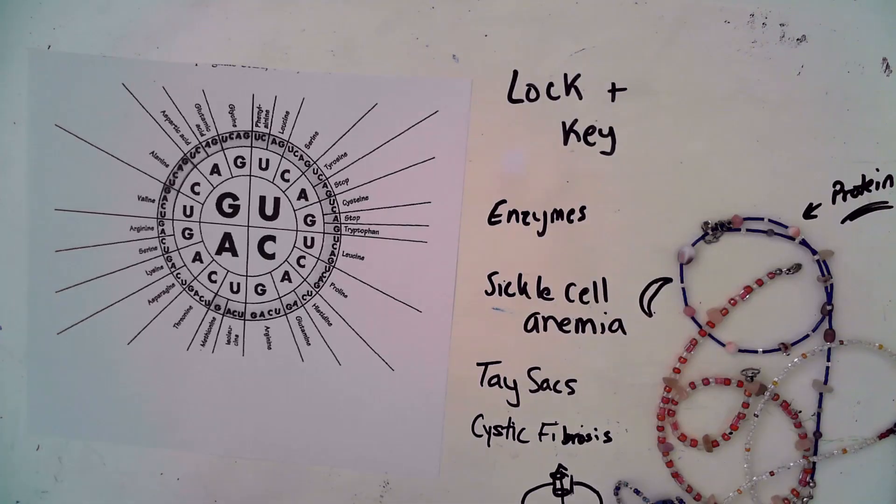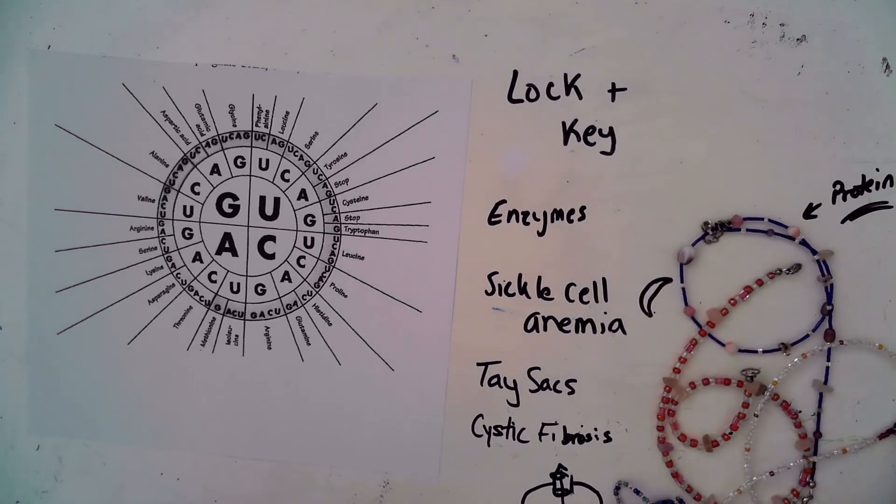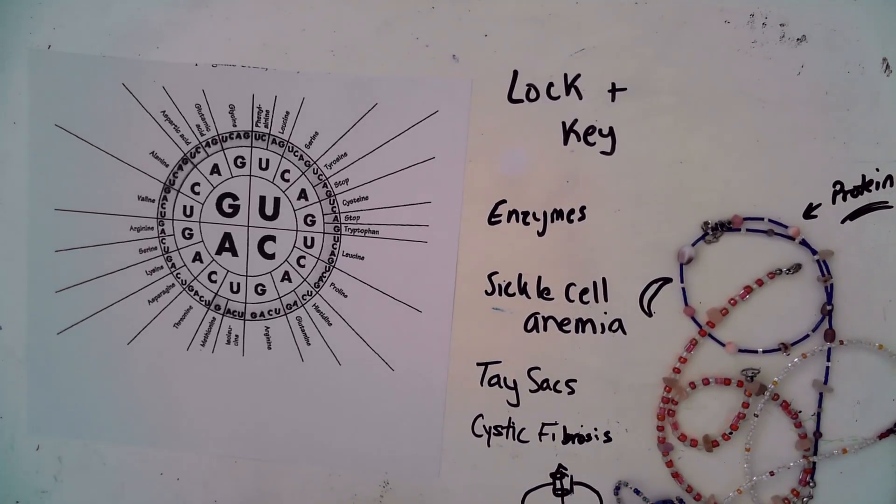Later in the year when you study genetics, you will find a lot more about how protein shape affects our traits. But these are some examples of how a misshapen protein can result in differences in a person's health. I hope you've enjoyed the video. Have a good day!